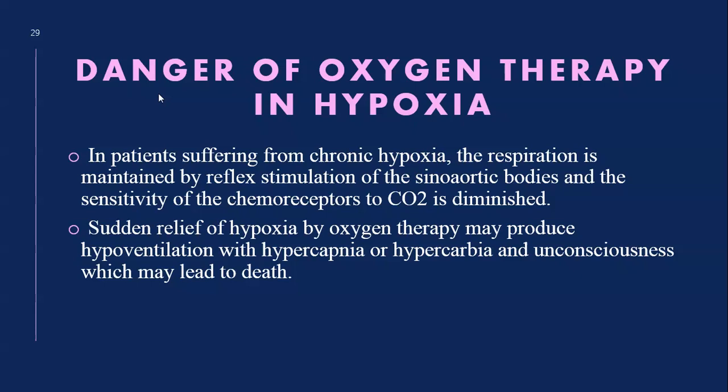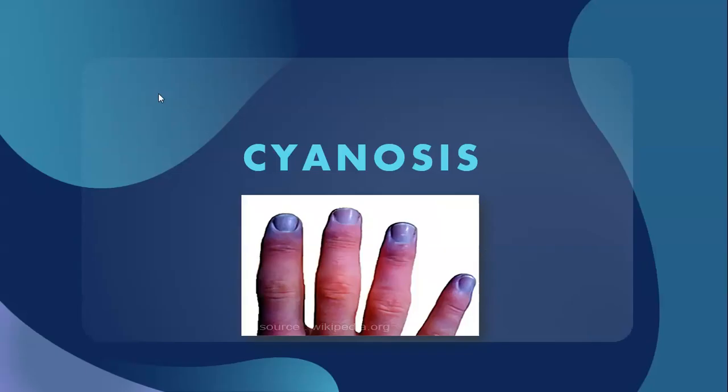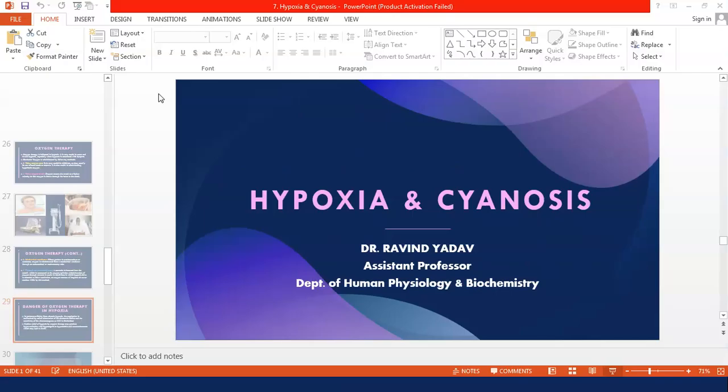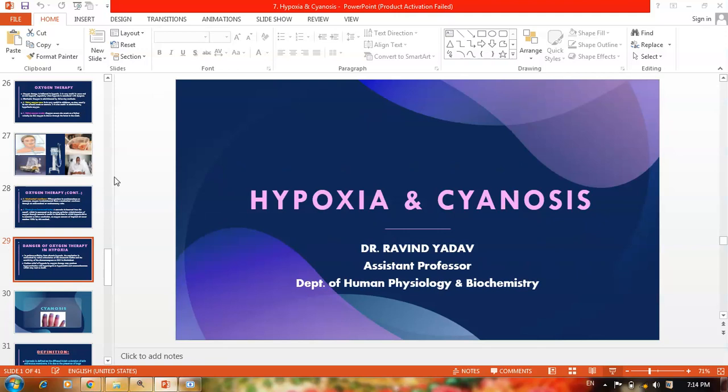Sudden relief of hypoxia by oxygen therapy may produce hypoventilation with hypercapnia, and unconsciousness may lead to death. In chronic patients, giving 100% O2 suddenly causes the body's reflex feedback mechanisms to change abruptly, leading the patient to hypoventilate with hypercapnia, which may result in unconsciousness and ultimately death.